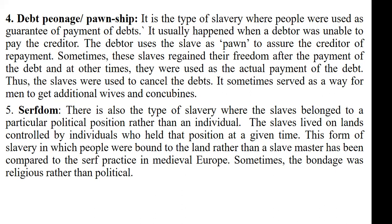The last type is serfdom. This is also the type of slavery where the slaves belong to a particular political position rather than an individual, and this political position is usually associated with a piece of land or a place of habitation. So the slave is a slave to the place that he or she is staying rather than to a particular person or an individual. We say that this type of slavery was more of a religious slavery or bondage rather than a political one.